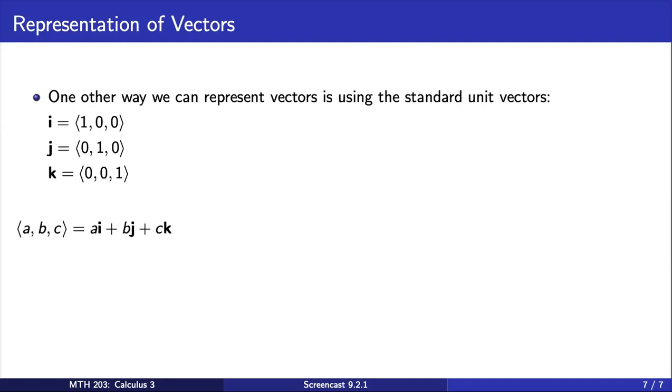Given a vector with components a, b, and c, we can represent this as a sum of the standard unit vectors. Note that this representation relies on vector addition, which you will learn more about in section 9.2.